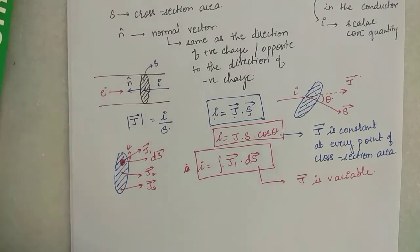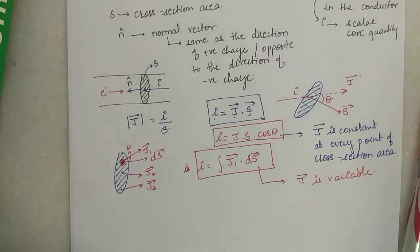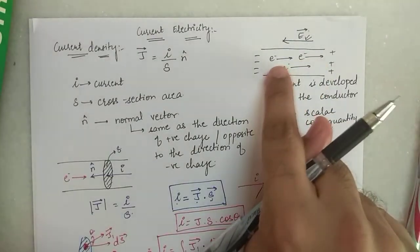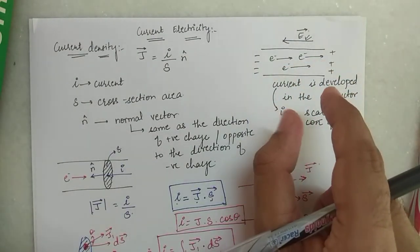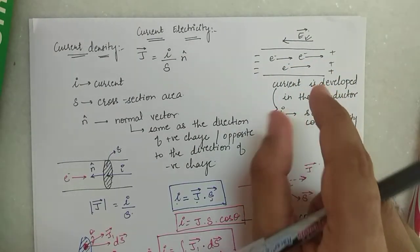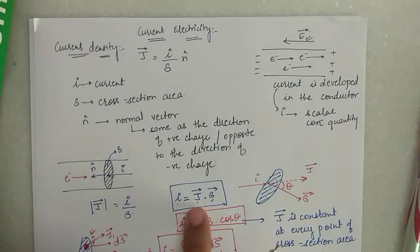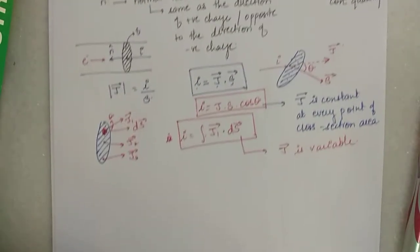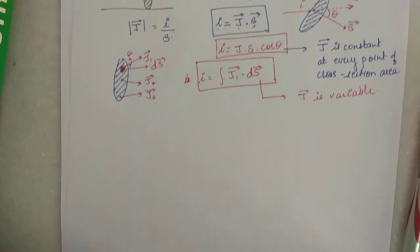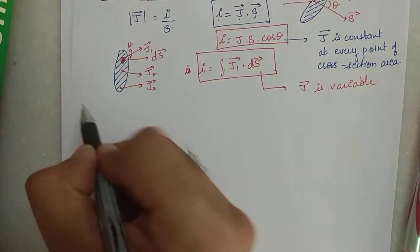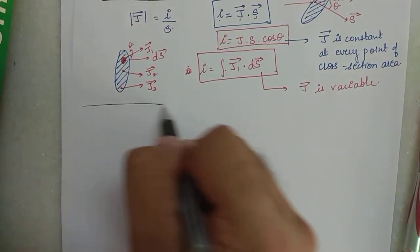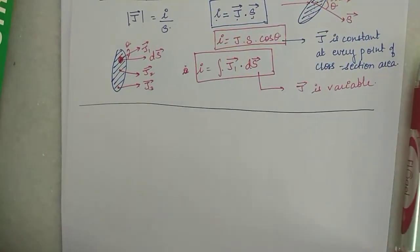Now what we are going to do is find out the relationship between current density and drift velocity. There should be a relationship — electrons are drifting, this generates current, and from that comes the concept of current density. So let's try to find out the relationship between current density and drift velocity.